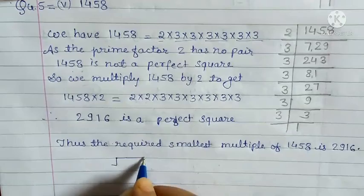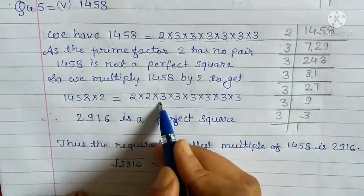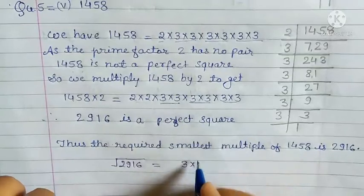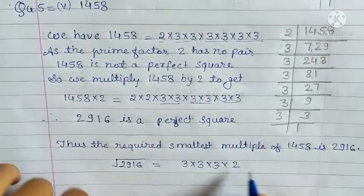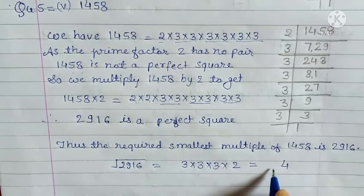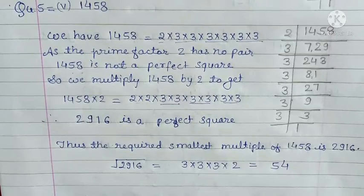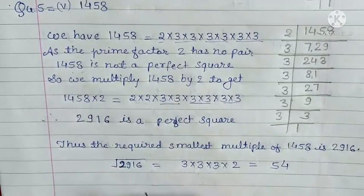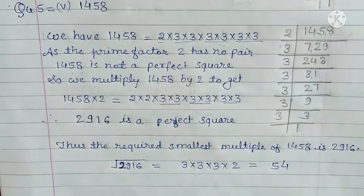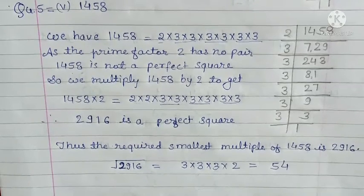Thus the required smallest multiple of 1458 is 2916, and 2916 is the square of 54. So complete question number 5 in the same way. Question number 6 uses division — just like 2 had no pair here, you divide by that number to get a perfect square. The remaining best questions we will do tomorrow.